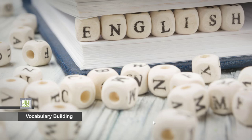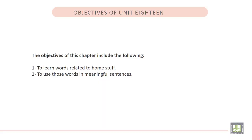Vocabulary Building 1, Unit 18: Around the Home. The objectives of this chapter include the following: 1. To learn words related to home stuff. 2. To use those words in meaningful sentences. Now, listen to the video of this unit.